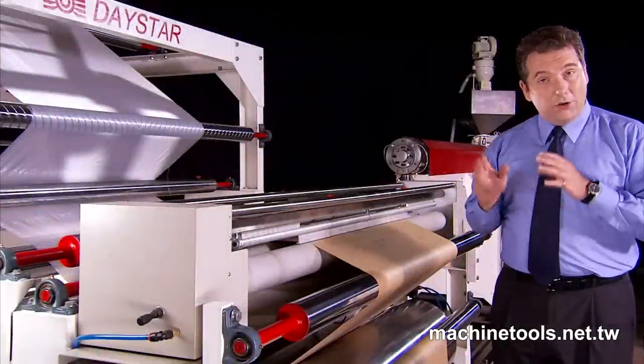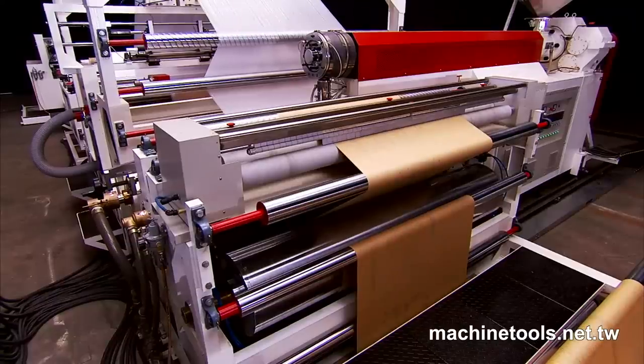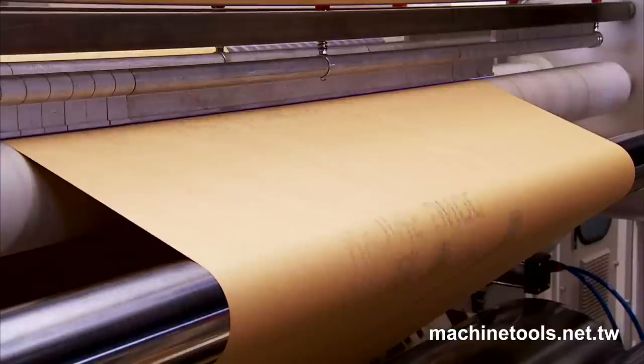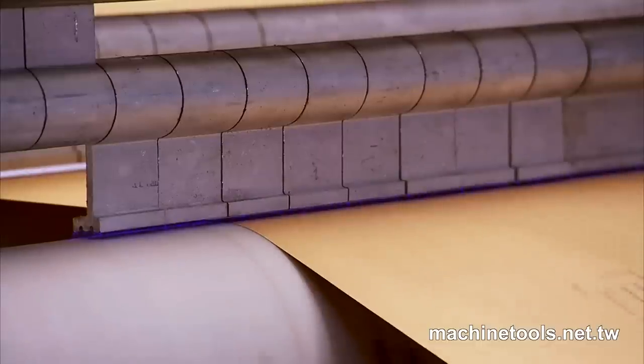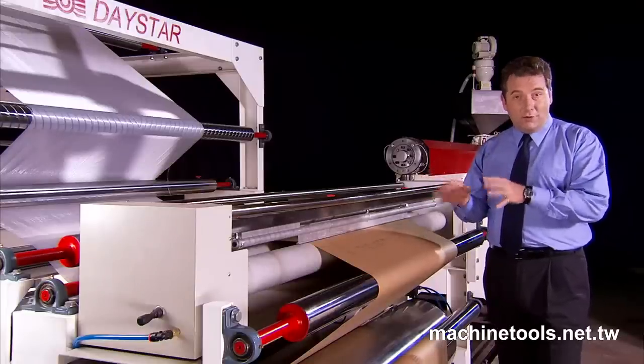The corona treater on this machine is in line and treats the surface of the substrate to enhance its adhesion properties for printing and dyeing operations as well as enhancing the adhesion of the substrate to the laminate. It achieves this by using carefully controlled electric sparks to create micro cavities in the surface of the material.